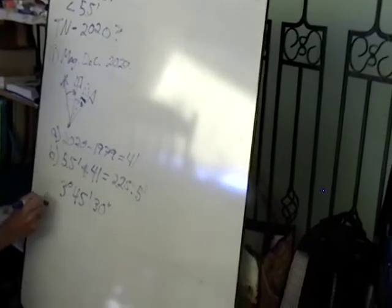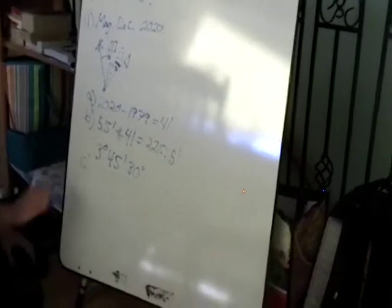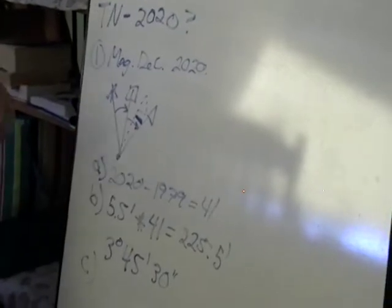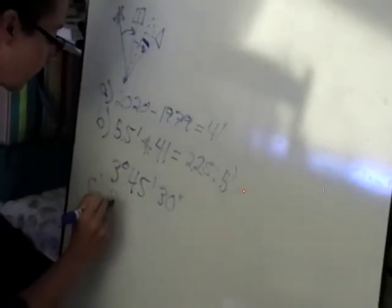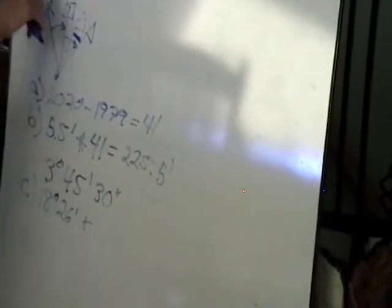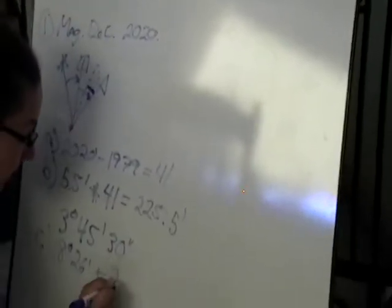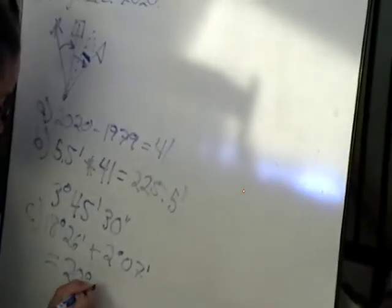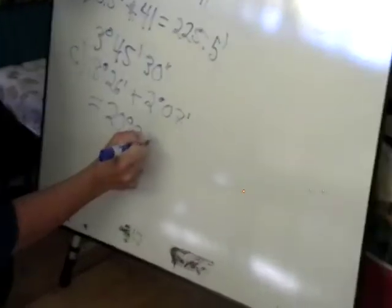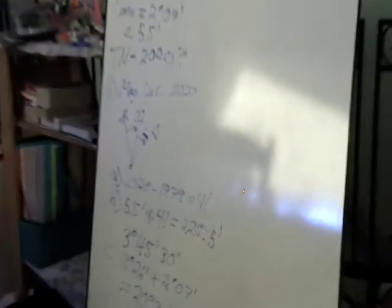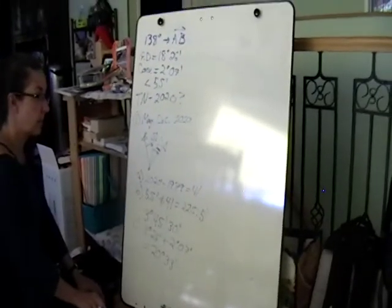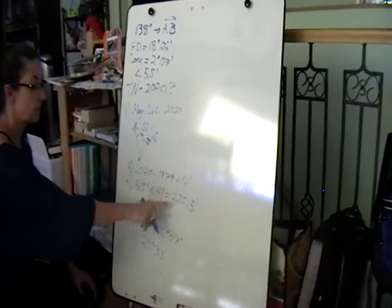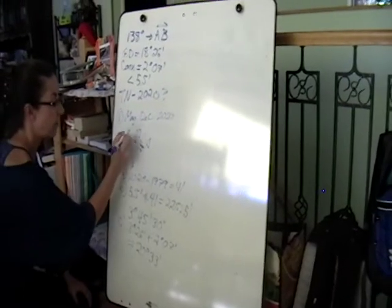The next step is to figure out the original declination. In this diagram we add the convergence angle with the grid declination: 18 degrees 26 minutes plus 2 degrees 7 minutes gives me 20 degrees 33 minutes. That's the original declination from true north to magnetic north. Now the next thing is to adjust this grid declination so that it matches true north.